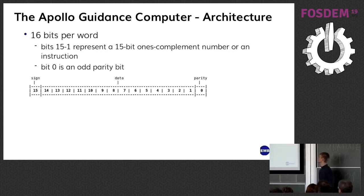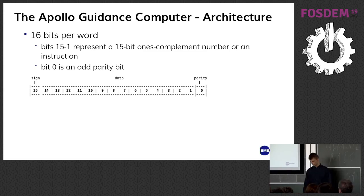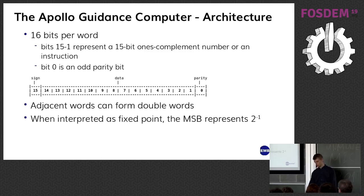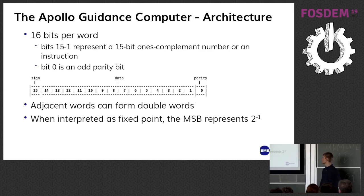The AGC has 15 bits available to use for each 16-bit word. These were used to represent either a one's complement number or the encoding of an instruction. The spare bit was used as an odd parity bit which allowed the hardware to detect basic bit errors. Adjacent words in memory could be used as double words — the sign bit must match, giving an effective 29-bit one's complement number. Some instructions interpreted the data as fixed point, and the most significant non-sign bit represented a half, giving a range of plus one to minus one.